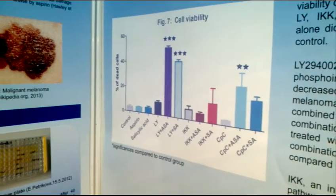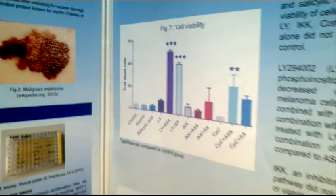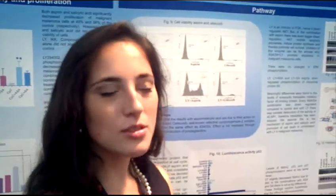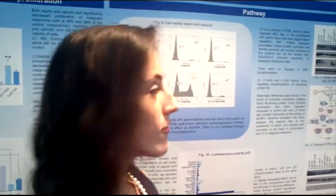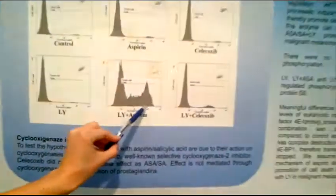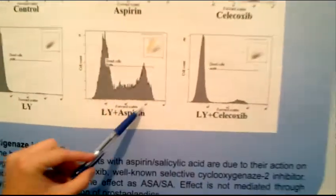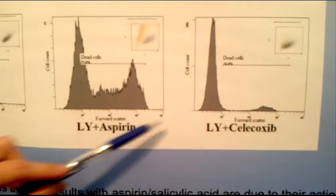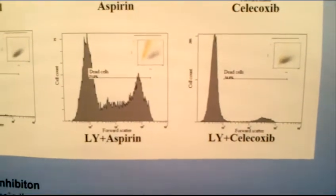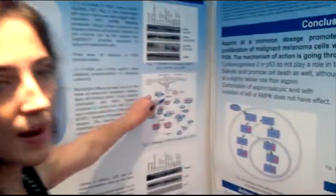Then I decided to find out why. And it looks like it's not going through the very usual aspirin pathway, through cyclooxygenase. Because you can see differences here between aspirin and the inhibitor of cyclooxygenase. But it looks like it can go through this pathway.